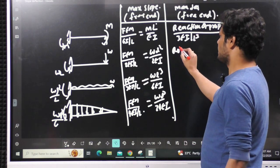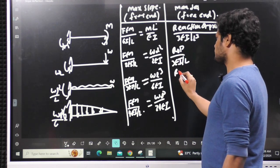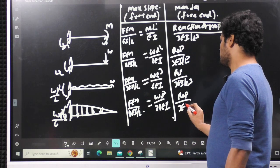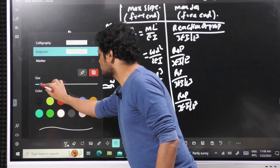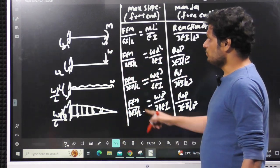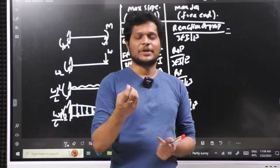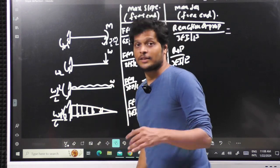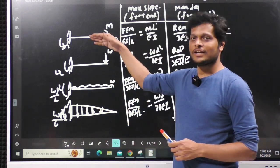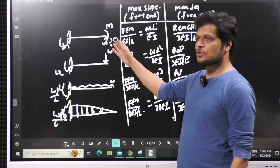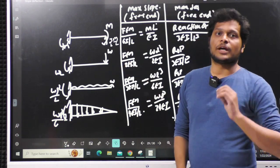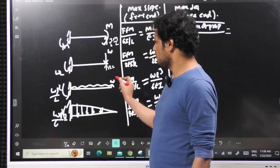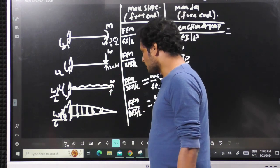If you place a prop at the free end and apply a moment M, the reaction you get is (3/2)·(M/L). This makes sense dimensionally: moment is in kN·m, so dividing by L gives a force unit (kN). If you apply a point load W directly at the free end, the reaction at the prop is simply W, because the load goes directly there.